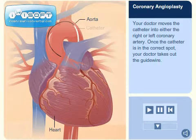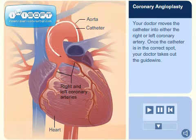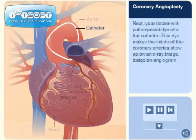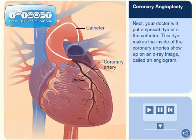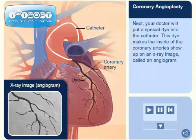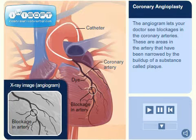Your doctor moves the catheter into either the right or left coronary artery. Once the catheter is in the correct spot, your doctor takes out the guide wire. Next, your doctor will put a special dye into the catheter. This dye makes the inside of the coronary arteries show up on an X-ray image, called an angiogram. The angiogram lets your doctor see blockages in the coronary arteries.